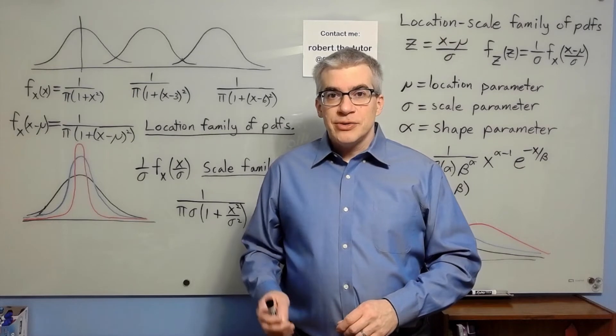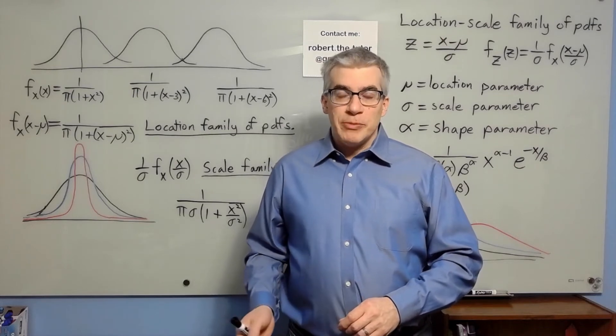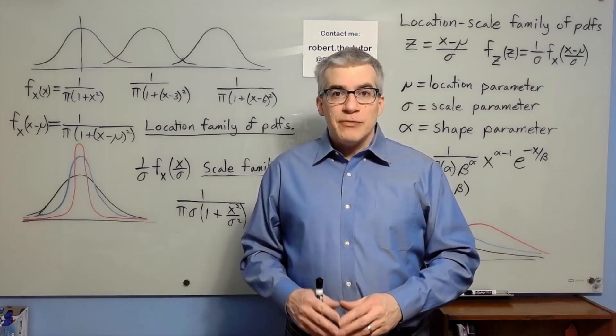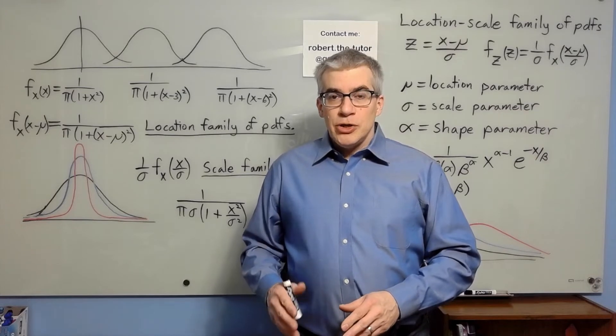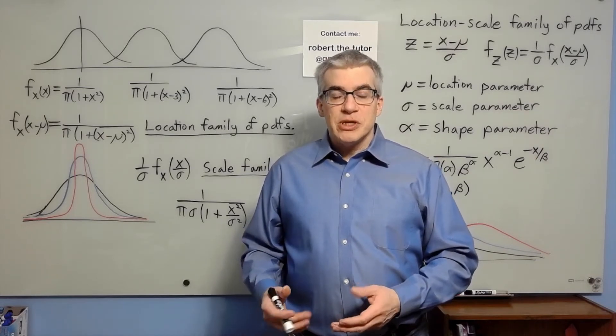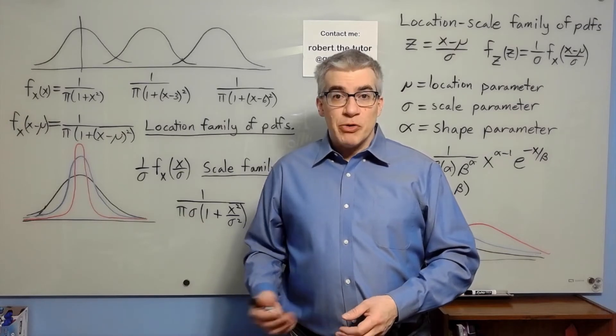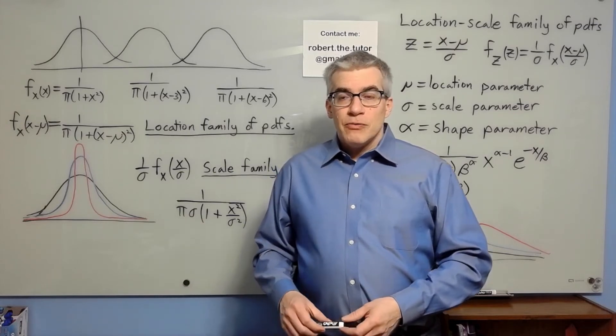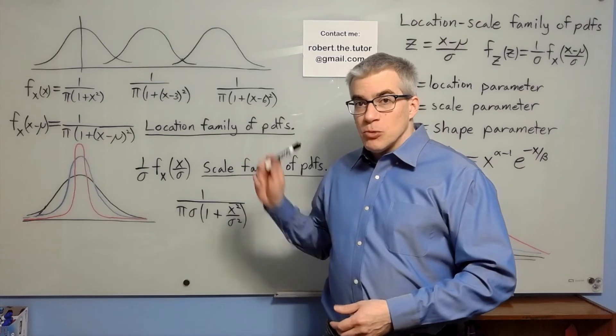What are location, scale, and shape parameters? If you have a probability distribution, you can generate an entire family of probability distributions by adding in an arbitrary parameter, a constant. For example, mu or sigma or alpha.